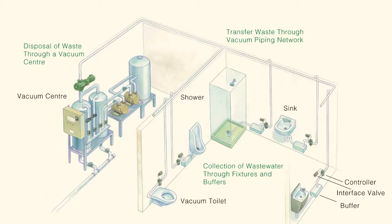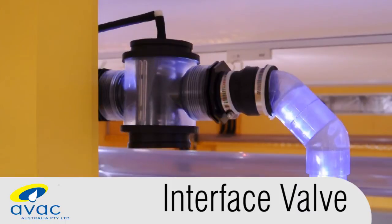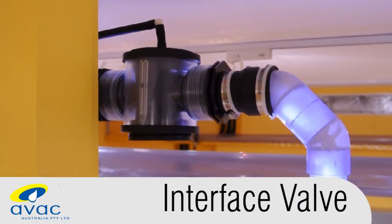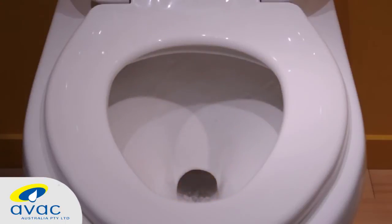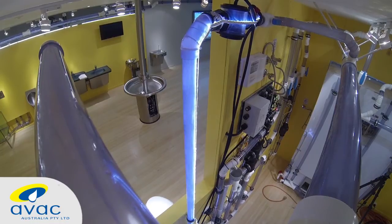The following demonstration shows the operation of a vacuum plumbing system from beginning to end. To start the process, an interface valve must be opened to create the interface between vacuum and atmospheric pressures that is used to move the waste.